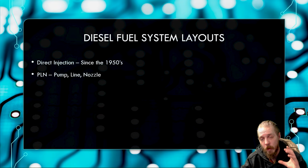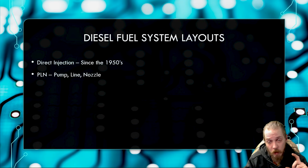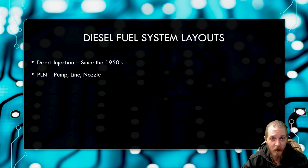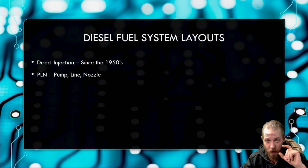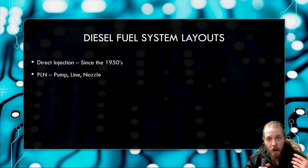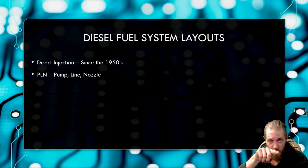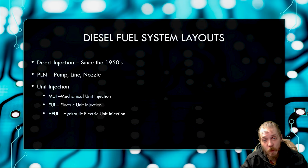We achieved injection a few different ways. Some of the earliest systems were PLN — pump, line, nozzle — where you'd have your mechanical injection pump and steel lines going to a nozzle. You can consider the pump, line, and nozzle as your entire injector. In a modern day system, all that would be compressed into one injection unit, whereas in PLN systems, individual cylinder injection was controlled within the injection pump itself, sent through the hard line to the nozzle, which was basically a spring-loaded valve.